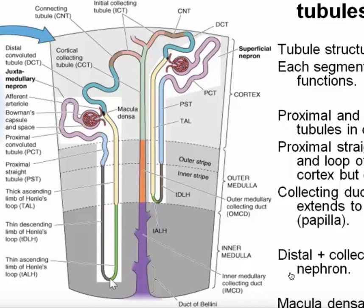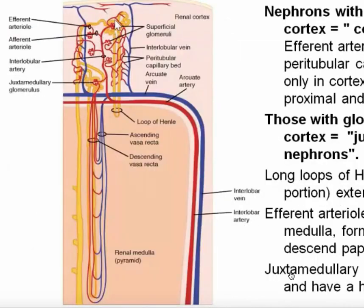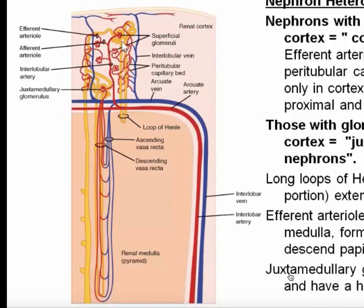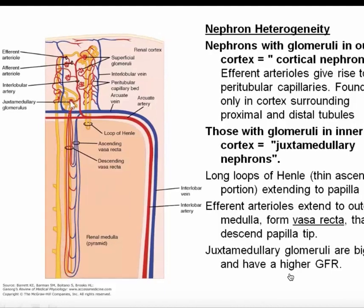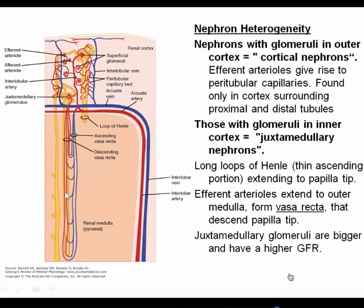The descending limb plunges deep into the inner medulla, makes its hairpin turn, and has a long thin ascending segment. This transforms into the thick ascending limb, which comes back and makes contact with the parent afferent arteriole, then the distal convoluted tubule, and then the collecting duct. In the cortex, the cortical glomeruli give rise to peritubular capillaries that stay entirely within the cortex and are responsible for picking up reabsorbate, mainly from the proximal tubule. The juxtamedullary glomeruli give rise to the vasa recta, which parallel the path of the tubule loop of Henle. We will talk in more detail later about these different populations of glomeruli and blood vessels.